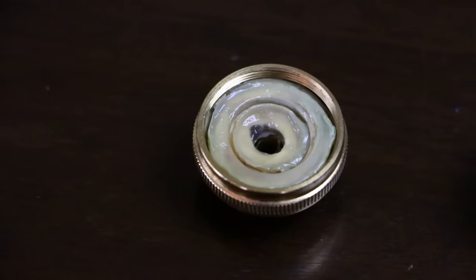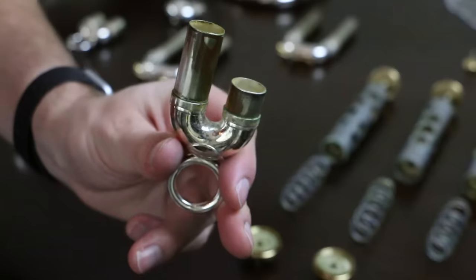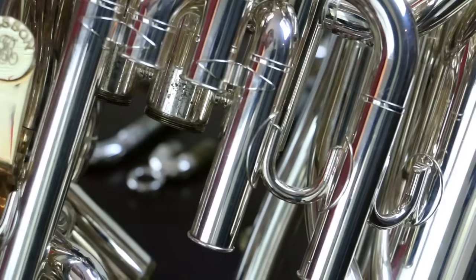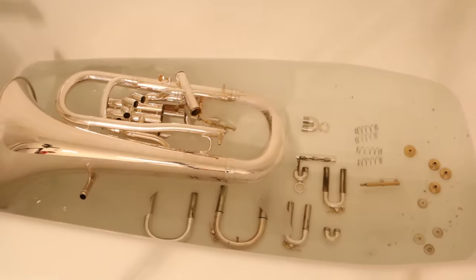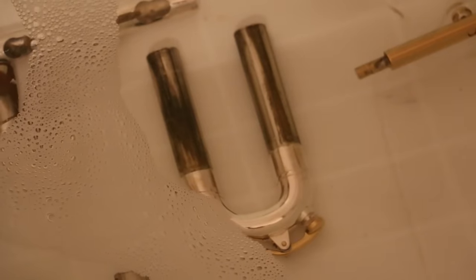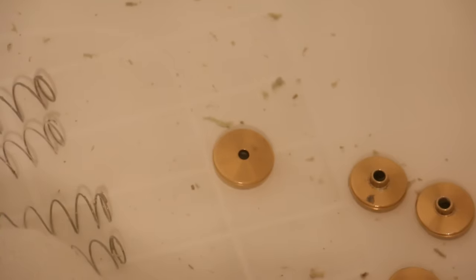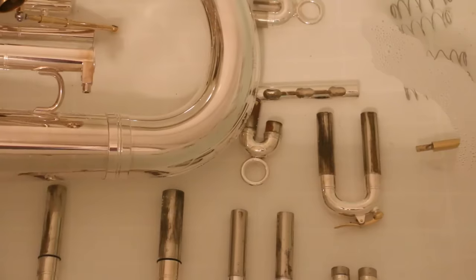Once your instrument is disassembled, you'll really be able to see how dirty everything is. I clean my horn all the time and it's still filthy. Fill up a bathtub with warm water and a little bit of soap. Place everything except the valves in the tub and your goal should be to have everything fully submerged. The water will start to look a little dirty. That's a good thing. It means all the gunk inside of your horn is starting to loosen up.